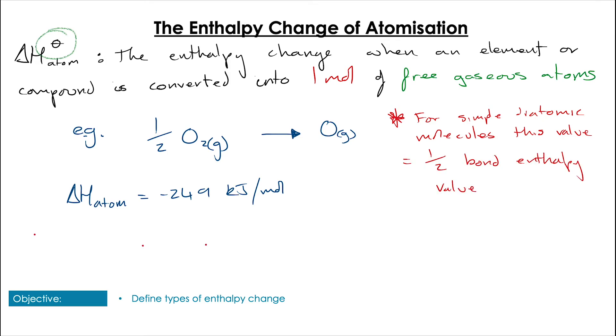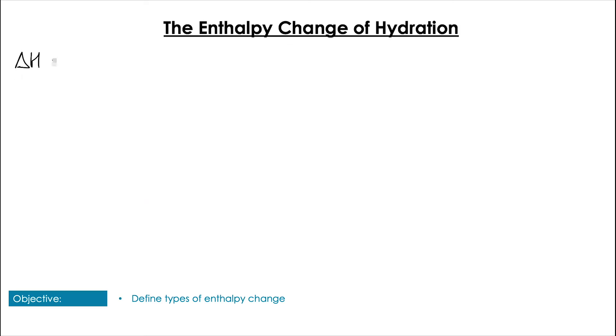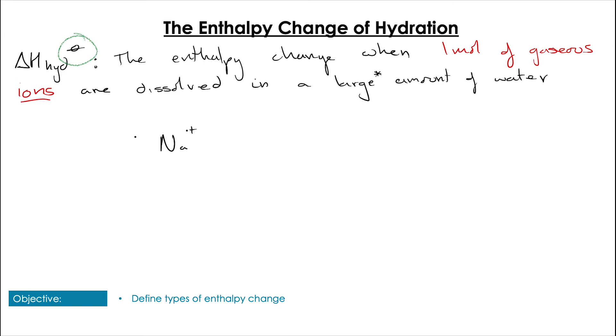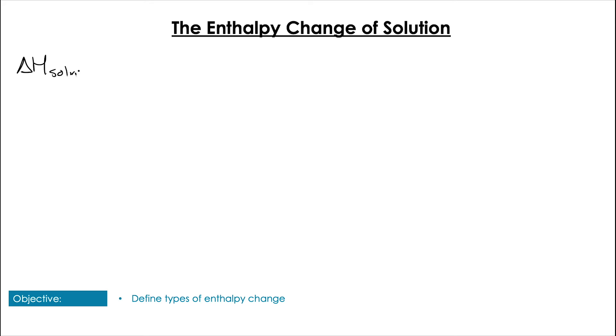Enthalpy of hydration, ΔHhyd, is the enthalpy associated when we take one mole of a gaseous ion and then we dissolve that in excess water. For example, Na+ gas goes to Na+ aqueous. The amount of water in excess here is very large; in this case, we have an enthalpy change associated with that of -406 kJ/mol.